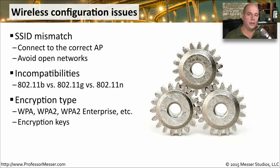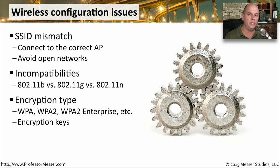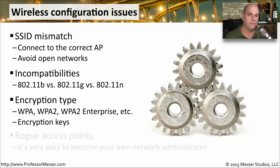Every wireless network needs to have encryption enabled, so you should be running ideally WPA2 or WPA2 Enterprise. All of the encryption keys need to be the same across all of your access points, or the authentication method needs to be the same if you're running WPA2 Enterprise. That way a user can be on one access point on one side of the campus and easily roam between all of the different access points because the encryption settings are exactly the same on every single one of them.